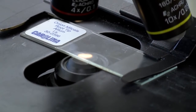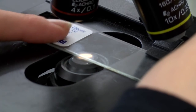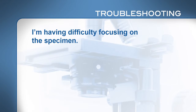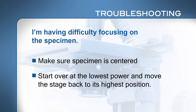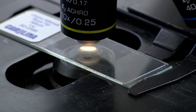If your slide doesn't move when you turn the knobs to adjust the slide holder, make sure you are using the right knobs and that the slide is clipped in place properly. If you are having trouble finding the specimen, make sure your specimen is centered. Start over at the lowest power and move the stage back to its highest position. If you get frustrated trying to focus, you can easily get so far out of focus that it's easier to start over. You should only need to do minor adjustments at each magnification. When focusing, move the slide just a little bit back and forth with the slide holder knobs — your eyes can see motion better than stationary objects.